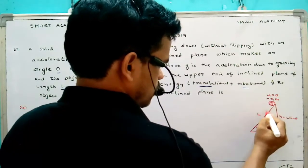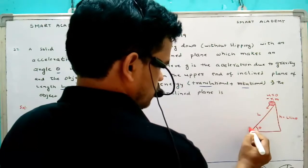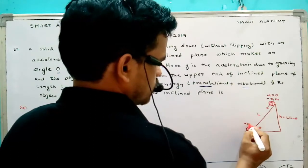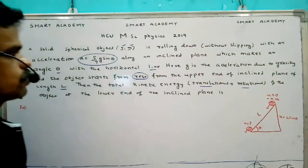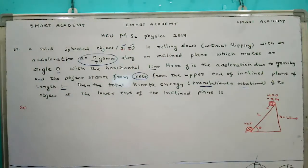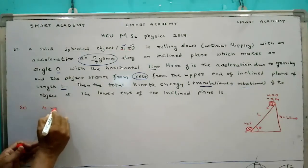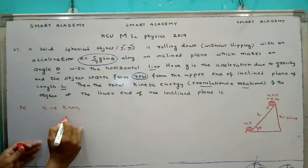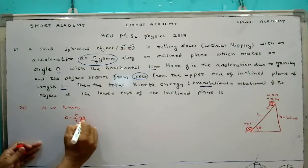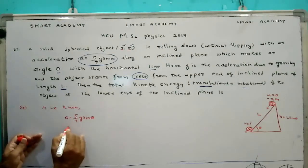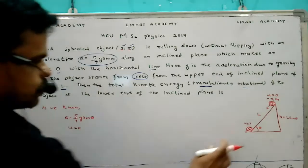That is moving from rest, that means u equal to zero, so moving down side and reach bottom. So here we ask u, we don't know. So here is the situation here. So the acceleration as we know, acceleration as we know from the equation, acceleration is equal to 5 by 7 g sine theta.